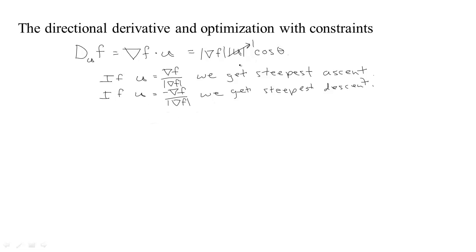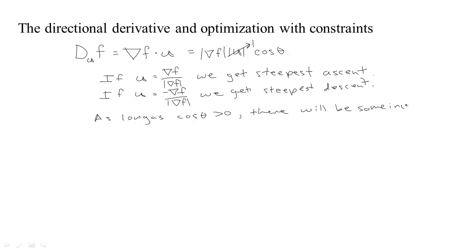Here's another thing to notice. You can go in any direction. As long as the cosine of theta is greater than zero — meaning the angle between the direction you're heading and the gradient is less than 90 degrees — you will see some increase in that direction.